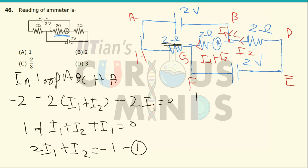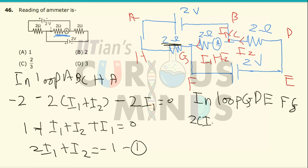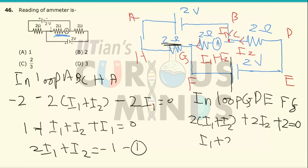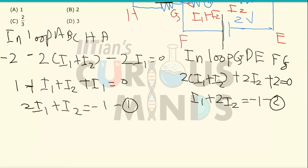Then applying the same loop law in loop G-D-E-F-G: it will be 2(i1 + i2) plus 2i2 plus 2 equals zero. Dividing by 2 gives i1 plus 2i2 equals negative 1. Let this be equation number two.